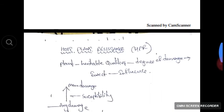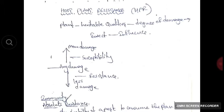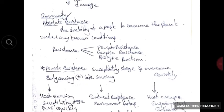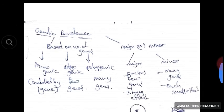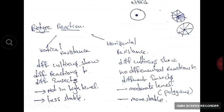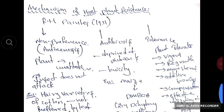Summary: Host plant resistance means every plant possesses some heritable qualities which influence pest attack, termed as HPR. If damage is more than average it is susceptibility; less than average is resistance. Immunity is the inability of a pest to consume the plant under any known conditions. Resistance is of three types: pseudo-resistance (host evasion, induced resistance, host escape), genetic resistance (monogenic, oligogenic, polygenic; major/minor genes), and biotype reaction (vertical and horizontal resistance). The mechanism of HPR was given by R.H. Painter and is divided into non-preference, antibiosis, and tolerance.